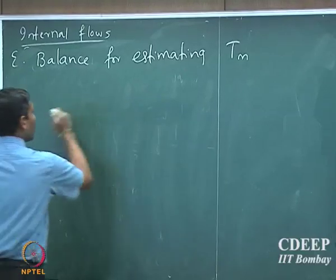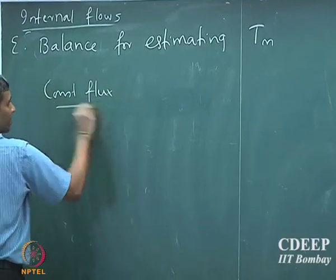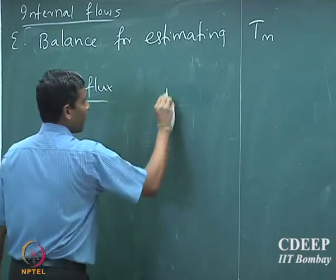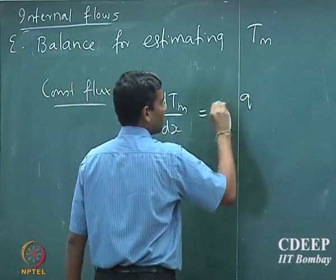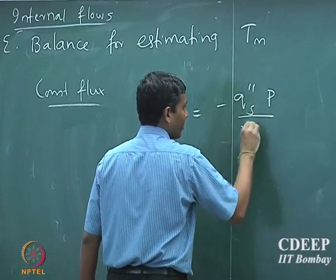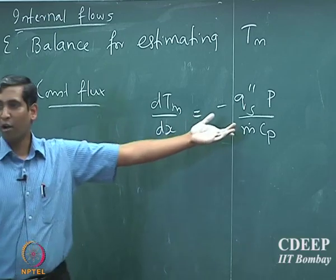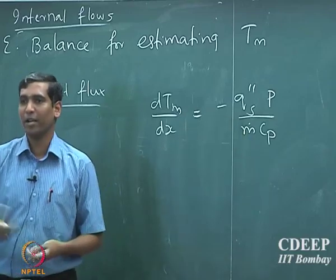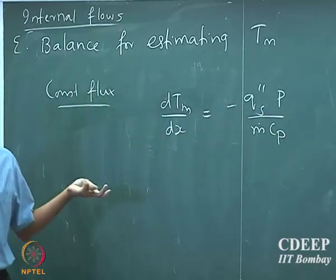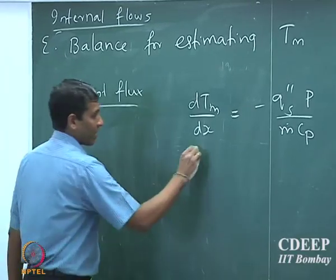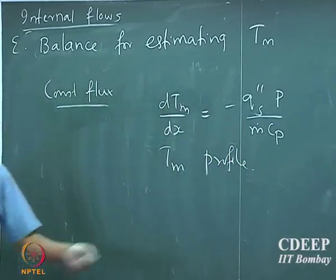For the constant flux case, dT_m/dx equals minus Q_s double prime times P divided by m-dot C_p. I know Q_s, I know P, I know m-dot and C_p, so I should be able to find the temperature profile. Obviously it is linear, as you can see.